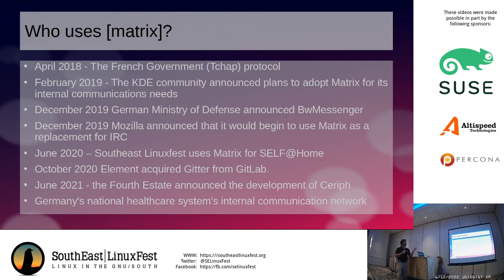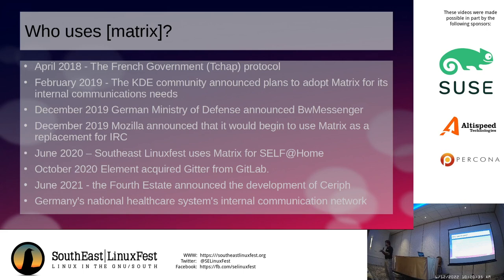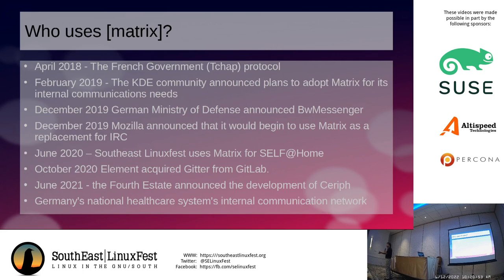December 2019, Mozilla announces they're going to switch to Matrix as their default communication system. Around this time, a little thing was happening out in Wuhan that eventually made its way here to the U.S., ended up shutting self down — and that's why we haven't seen each other in person for the past few years. June 2020, we were ramping up to try to do SELF virtually. We'd never done SELF entirely virtually, so that was something new. I had heard of Matrix, played with it a little bit, but wasn't terribly well-versed in it. So I set up a server and played with it, and it worked most of the time, not all of the time.